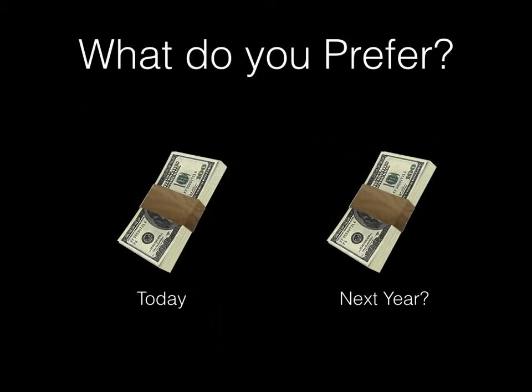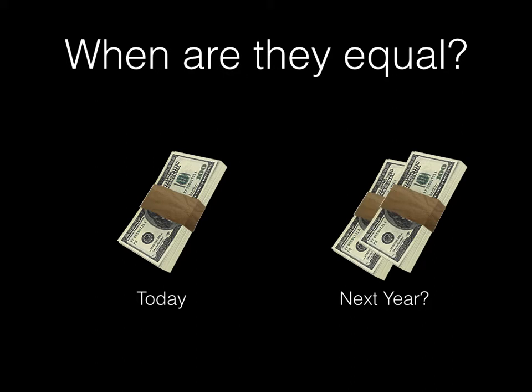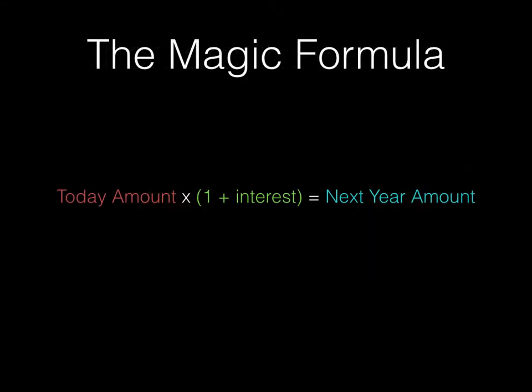If I said to you, would you like $1,000 today or $1,000 next year, which one would you choose? Most people would prefer to have $1,000 today. So how much must I offer you the following year in order for these two amounts to be equal? If I offered you $2,000 the following year, would you still prefer to take $1,000 today? This can be simplified into the magic formula that underlies a lot of actuarial science: today's amount times the interest rate equals next year's amount.